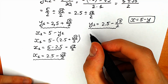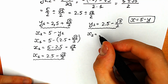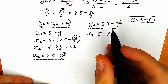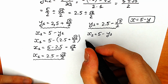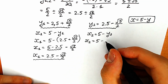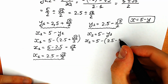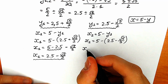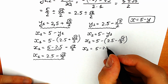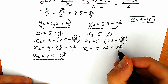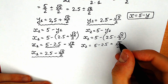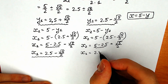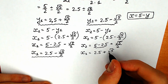For x₂: plugging in y₂, we have x₂ equals 5 minus (2.5 minus square root of 5 over 2). Simplifying: 5 minus 2.5 equals 2.5, and the minus sign flips, so x₂ equals 2.5 plus square root of 5 over 2.